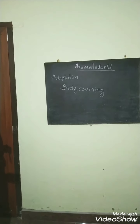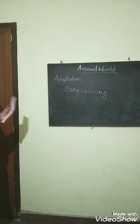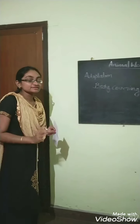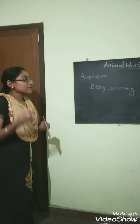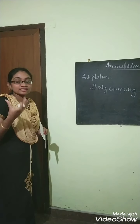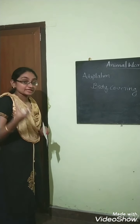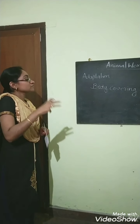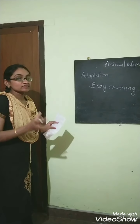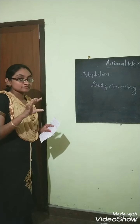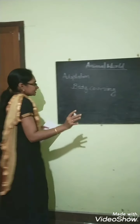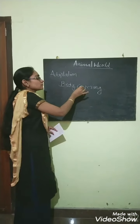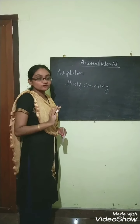So what is this body covering? It is just the covering of the body of certain animals to help them survive in a certain habitat. It helps them to survive in extreme climates, helps to keep their body warm, and protects them from rain and many things. There are different types of body covering for different animals.